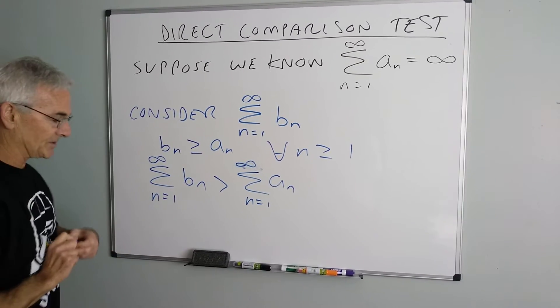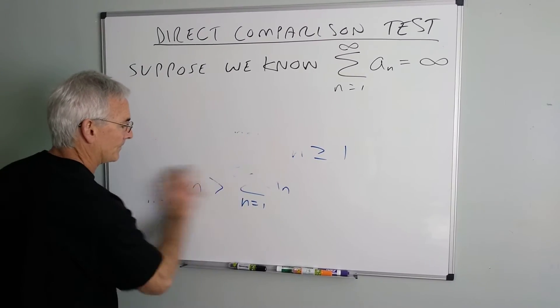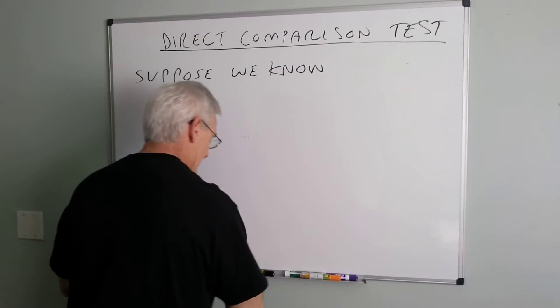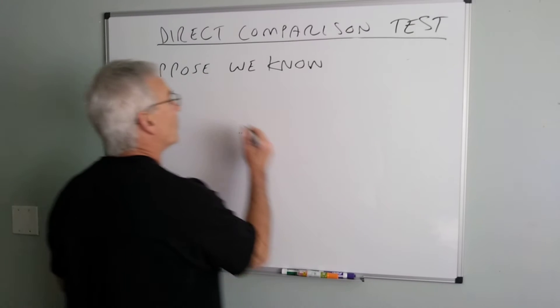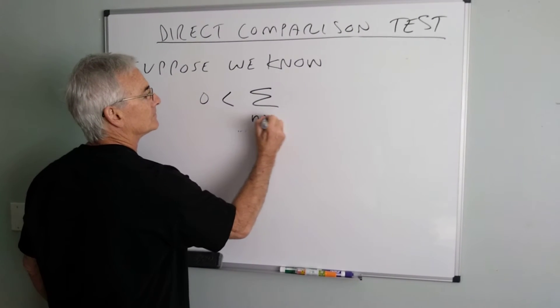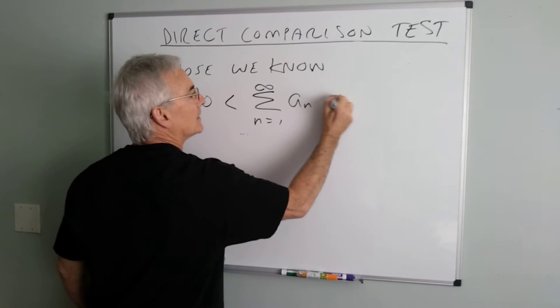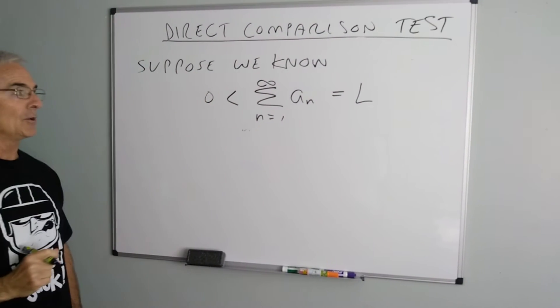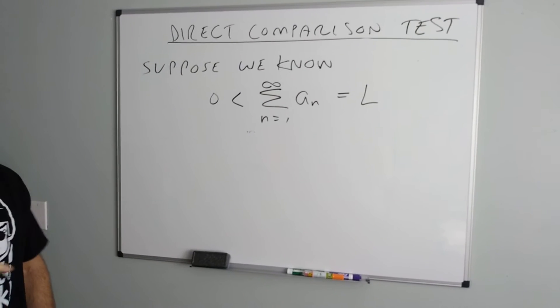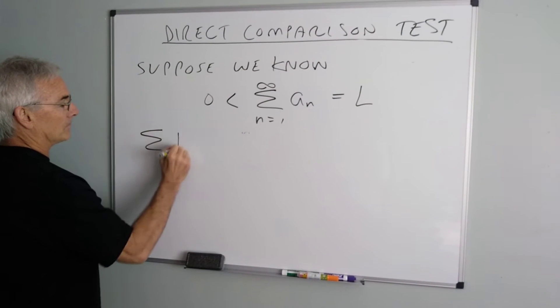So now let's look at the situation where the sums are finite. So now let's consider that we know we have a particular sum and we'll say L is finite but it is positive. Now I have another series. Let's call it again BN.